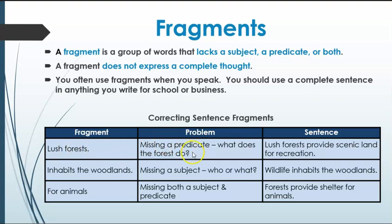Here are some examples of correcting fragments. 'Lush forests' is not a sentence — it's missing a predicate. Corrected: 'Lush forests provide scenic land for recreation.' 'Inhabits the woodlands' is a fragment missing a subject. Corrected: 'Wildlife inhabits the woodlands.' 'For animals' is a prepositional phrase missing both subject and predicate. Corrected: 'Forests provide shelter for animals.' In each case, you simply create a complete sentence from it.